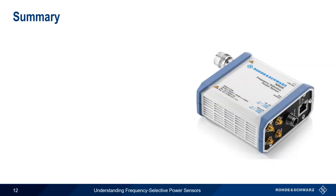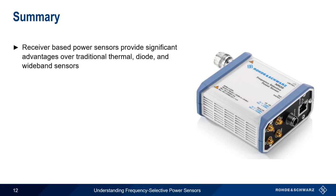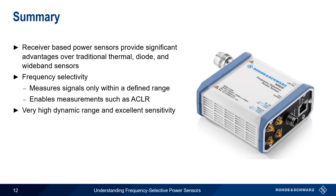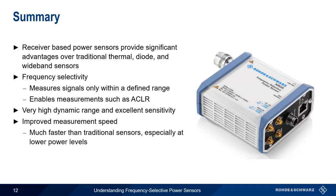So let's summarize what we've learned. Receiver-based power sensors, such as the Rohde & Schwarz NRQ6, provide significant advantages over traditional thermal, diode, and wideband power sensors. These advantages fall into three main categories: the first is frequency selectivity — frequency selective sensors measure signal power only within a user-defined frequency range or filter width, and this also enables frequency-specific measurements such as ACLR. Additional advantages are very high dynamic range and excellent sensitivity. And finally, receiver-based power sensors have greatly improved measurement speed — not only are they much faster than traditional sensors, but this improvement is even more dramatic at lower power levels. This concludes our presentation, Understanding Frequency Selective Power Sensors.